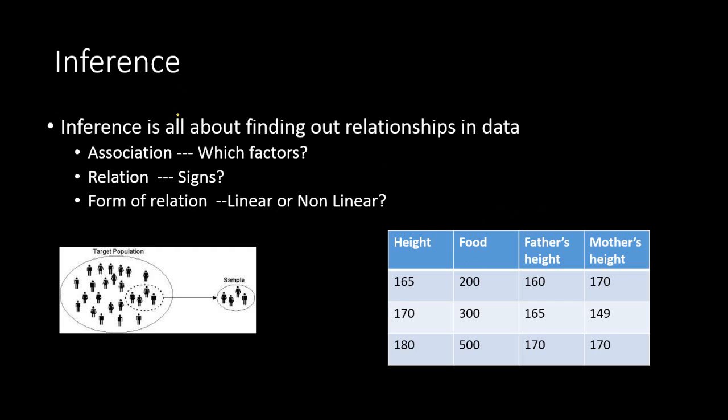Statistical inference is all about finding out relationships in a data set. What is done in statistical inference is that you take out a sample from your population and you try to study the relationship between the different attributes or variables in your sample. You come up with different inferences and you make that inference for your population.